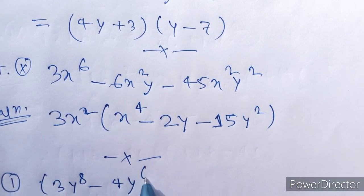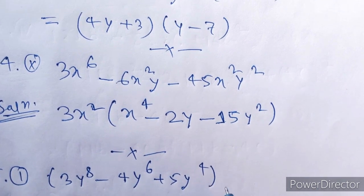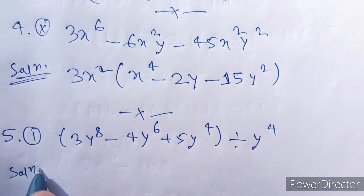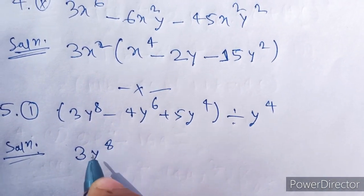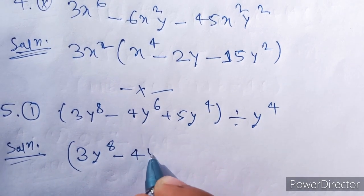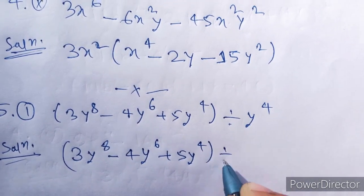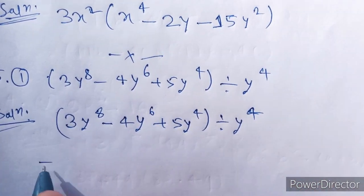3y²⁴⁸ - 4y²⁴⁶ plus 5y²⁴⁴ and 4y²⁴⁴. Solution: 3y²⁴⁸ - 4y²⁴⁶ plus 5y²⁴⁴, 4y²⁴⁴.